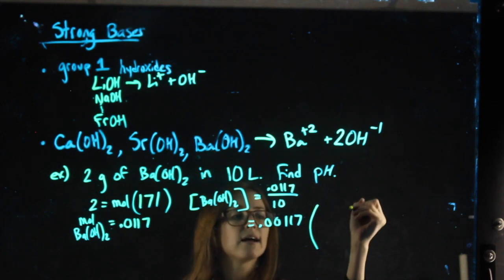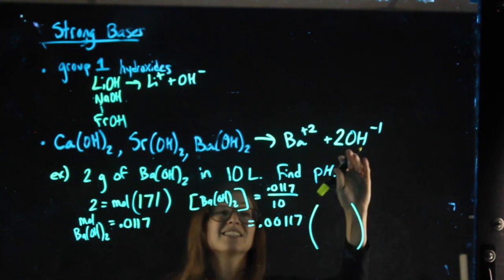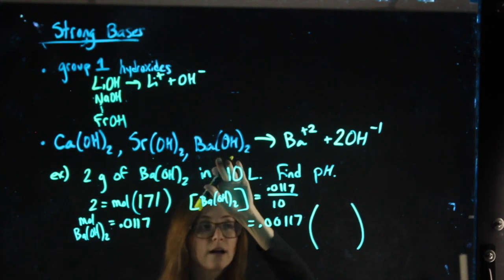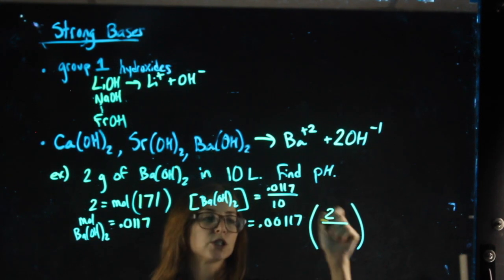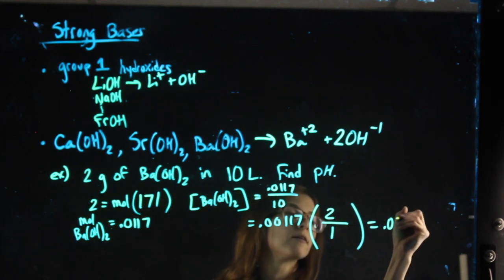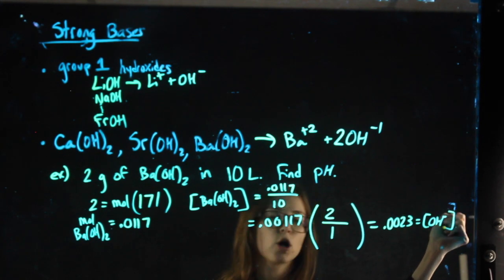So, in order to get to my concentration of hydroxide, which at least hydroxide is in the formula somewhere, barium hydroxide is not, I'm going to multiply by what I want, which is the hydroxide, over what I have, which is the barium. And I get 0.0023 as my hydroxide concentration.